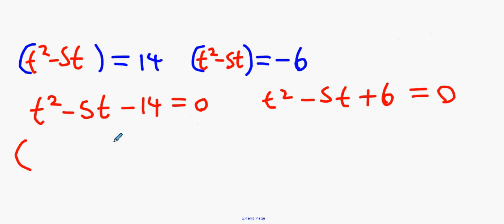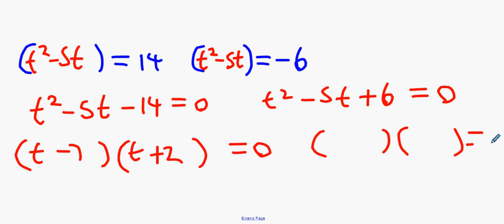So two numbers that multiply to give you minus 14, but add to give you minus 5. Minus 7 and plus 2. On the other side, two numbers that multiply to give you plus 6, but add to give you minus 5. Minus 6 plus 1 won't work. I'll explain why.